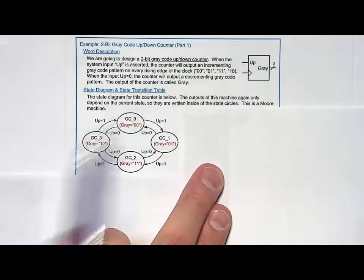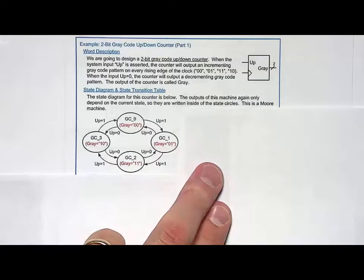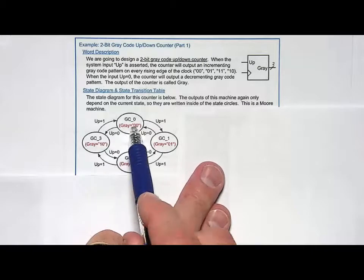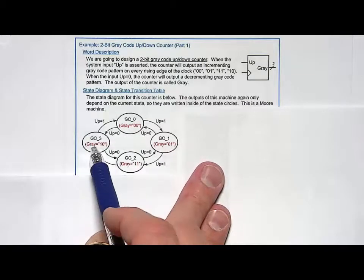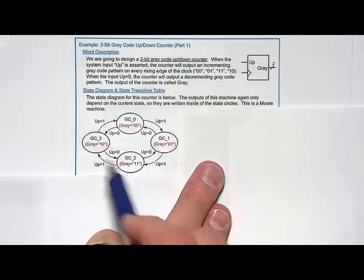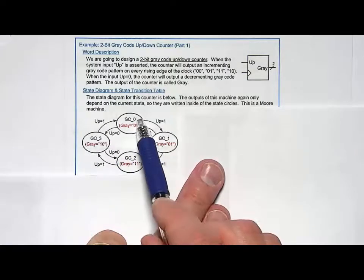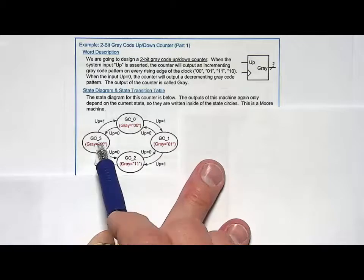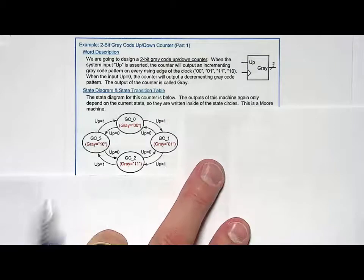We will say each state is going to produce the output, the counter value. So we'll say gray is 00 here, gray is 01 here, gray is 11 here, gray is 10 there. And all we need to do now is transition to the states accordingly. So when up is a one, we will transition clockwise. And when it is a zero, we will transition counterclockwise. And that is the functionality we're after.